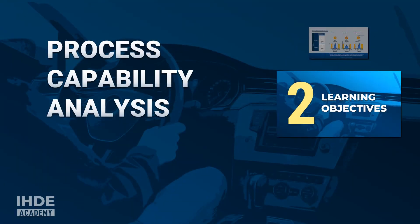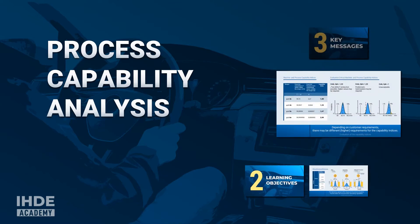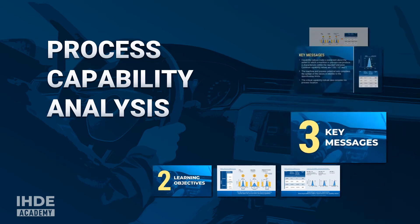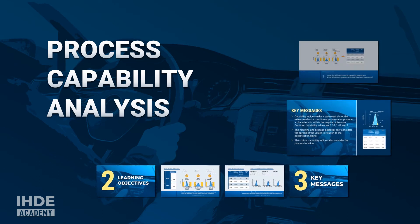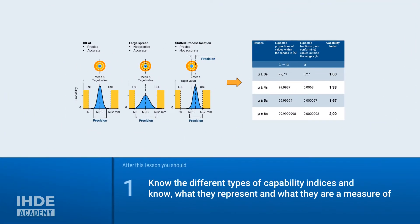In this lesson, we will look at what capability indices are and what they stand for when it comes to the ability of a machine or process to produce characteristics. This lesson has two learning objectives. After this lesson, you should know the common terms and contexts of capability indices, and you should also know the different types of capability indices, what they represent, and what they are a measure of.